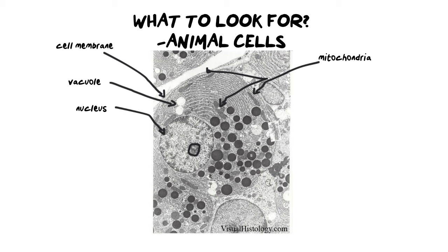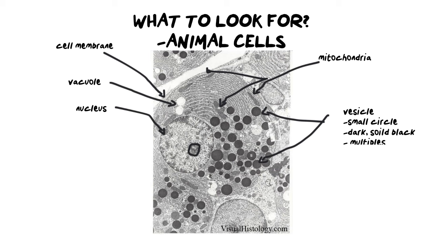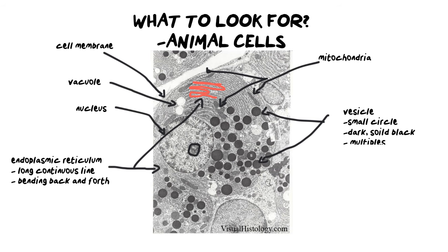Now for some new structures: the numerous small dark solid black circular structures visible throughout are known as vesicles. We identify them as small circles that are dark and solid — multiples of them — because vesicles store substances, which is why you can't see through them. The other new structure, also quite prominent, is a long bendy network of lines traveling through the whole cell going back and forth. That long network is called the endoplasmic reticulum — it's a long continuous line that bends backwards and forwards.